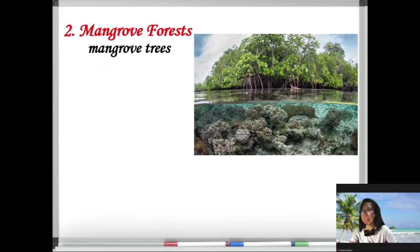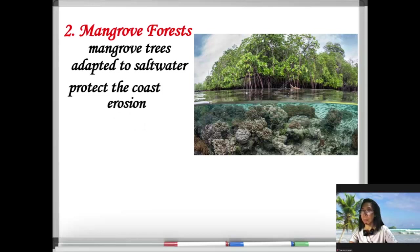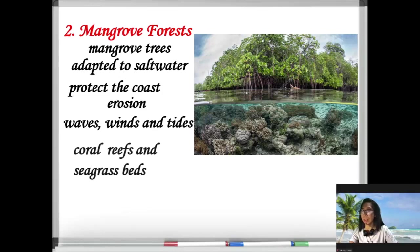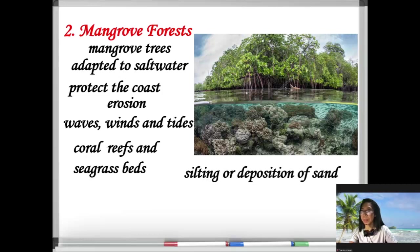Number two is the mangrove forest. These forests are filled with mangrove trees that are adapted to salt water. The mangrove forest protects the coast against erosion caused by winds, waves, and tides. It also protects the coral reef and seagrass beds from silting — the deposition of sand.